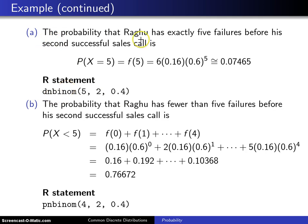For part a, the probability of exactly five failures before the second successful sales call, all I have to do is plug 5 into the probability mass function. Here is what you get, and to four digits that's 0.07465. That is calculated with the R statement dnbinom(5, 2, 0.4).